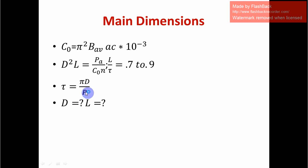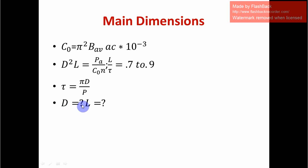Since D is unknown, we express L in terms of D and substitute back into D²·L. This gives D³, and we take the cube root to find the diameter D. Then substituting D back gives us L. Together, D and L are the main dimensions of the DC machine, and we can use these to complete the design.